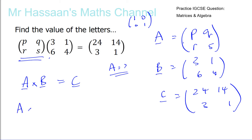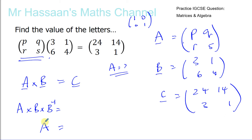So A times B times the inverse of B will leave us with just A, because B times the inverse of B gives you the identity matrix 1, 0, 0, 1. And A times the identity matrix gives you the same thing — it's like multiplying by 1.